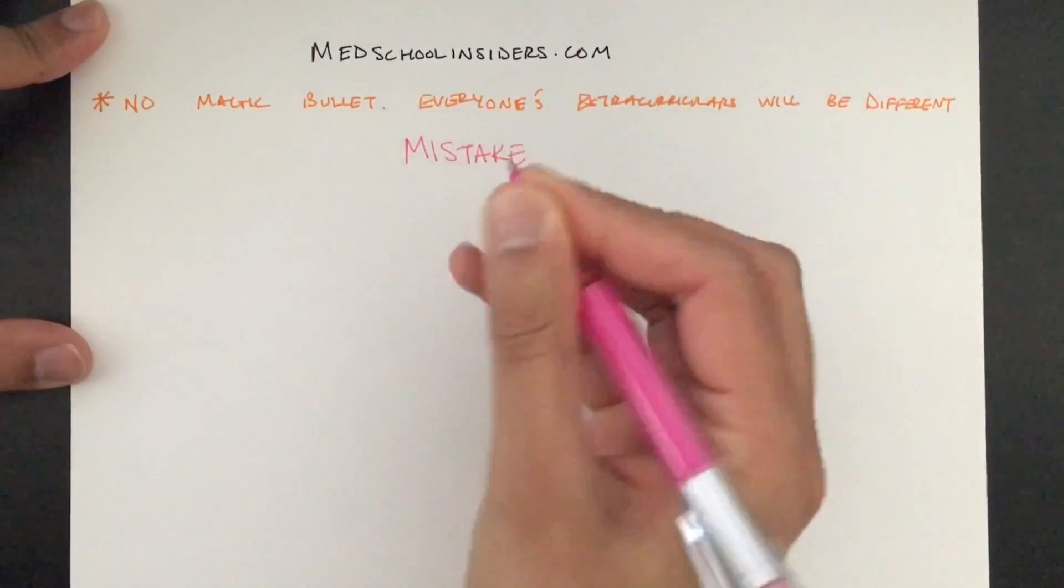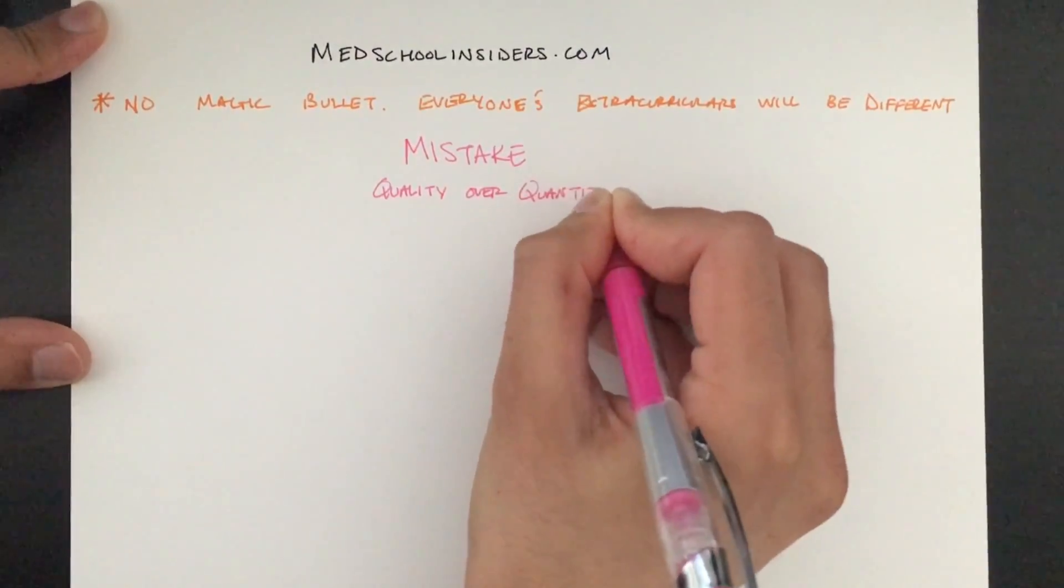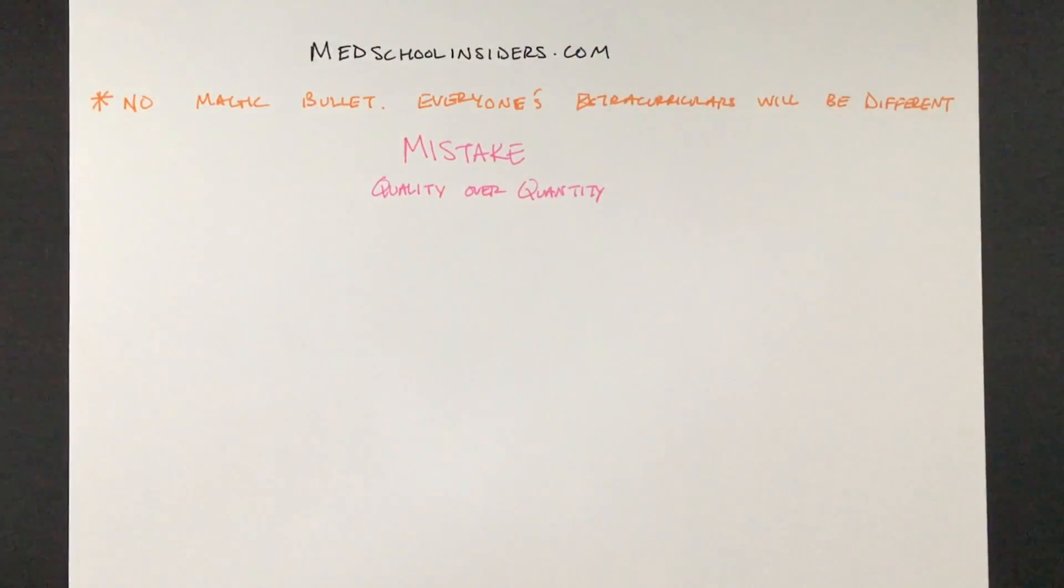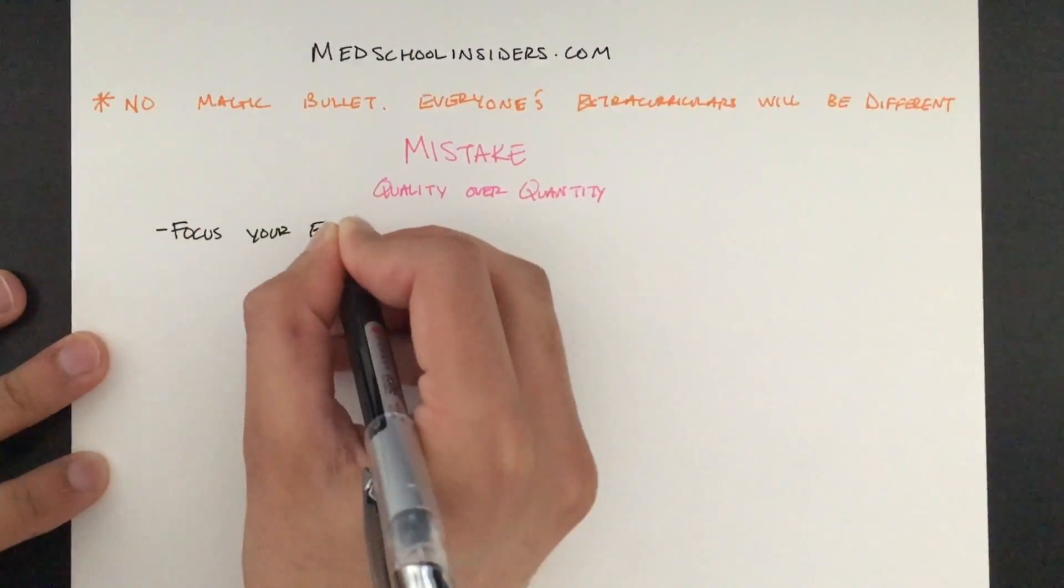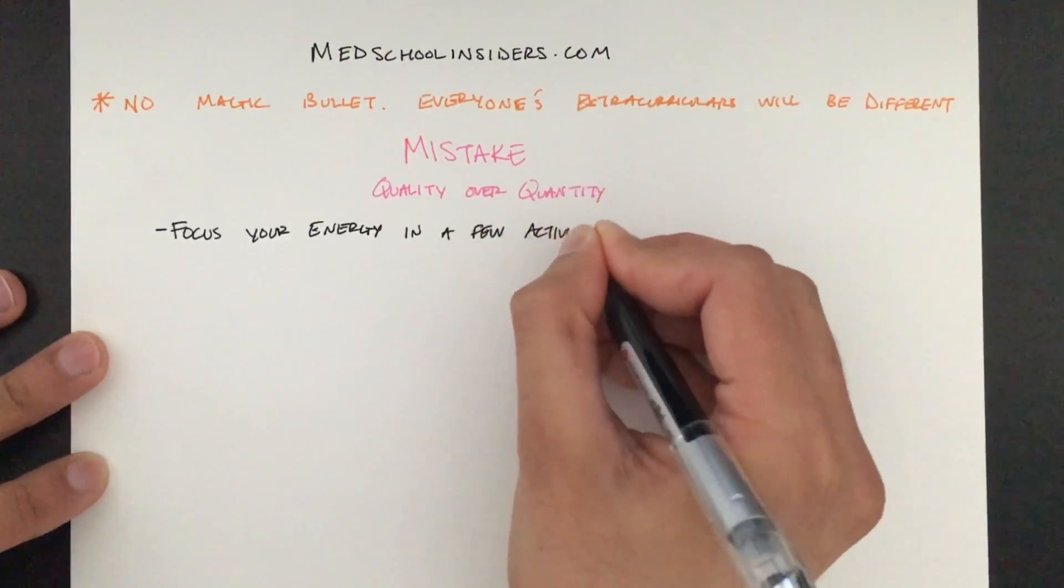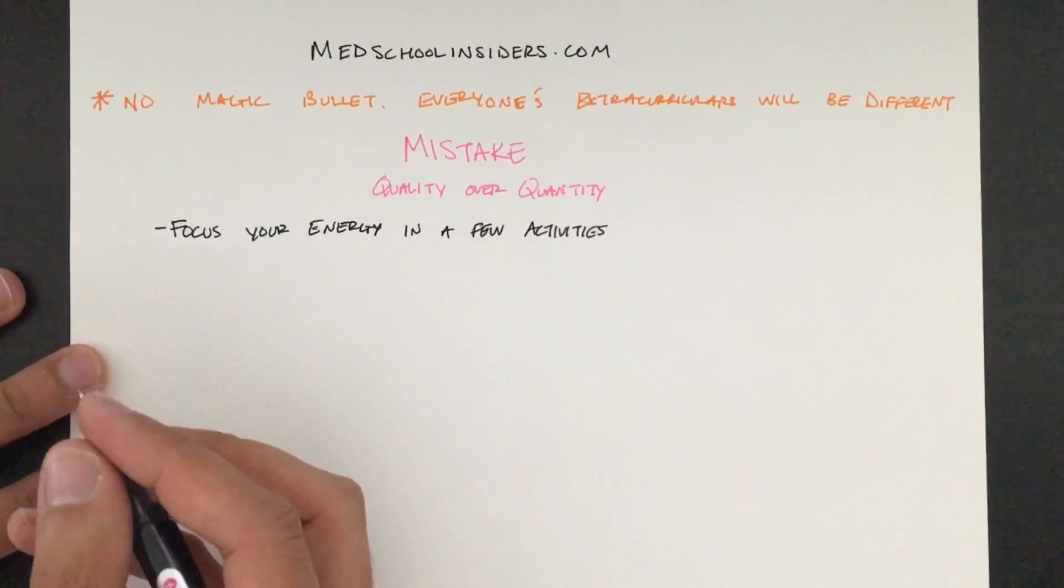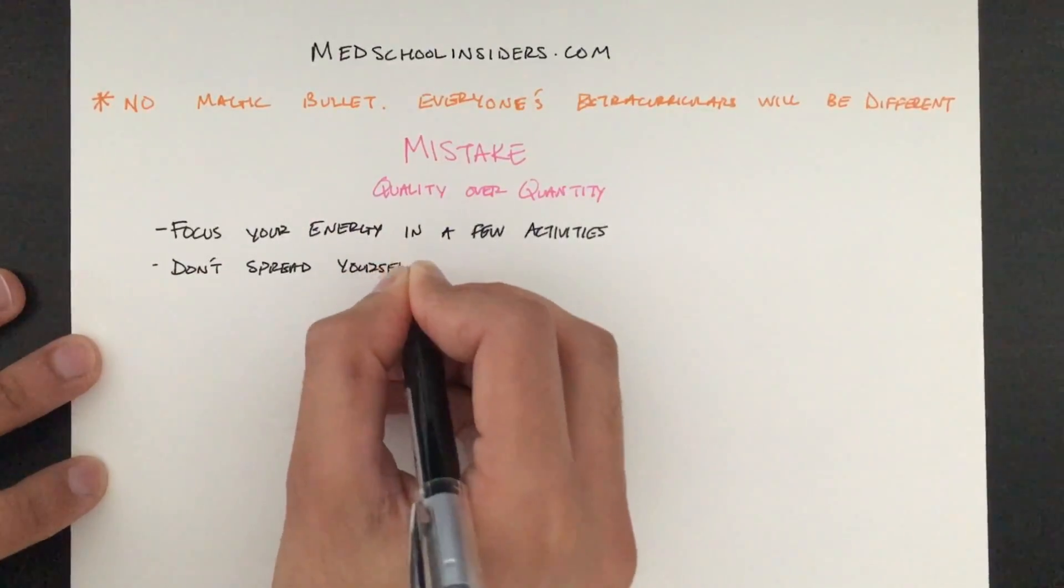A common mistake that many pre-meds make is spreading themselves too thin. It's much better to focus your energy on only a few extracurriculars rather than joining several clubs or organizations as a member. I made that mistake and I joined multiple pre-med or health-focused student groups. I was simply a member and I never pursued any leadership positions.